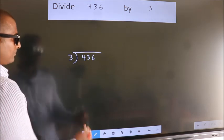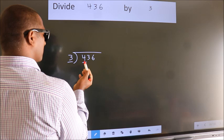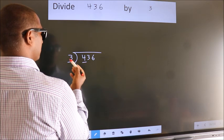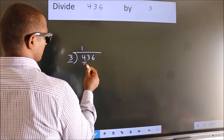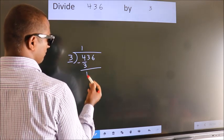Next. Here we have 4, here 3. A number close to 4 in the 3 table is 3 times 1 equals 3. Now we should subtract. We get 1.